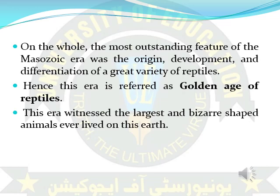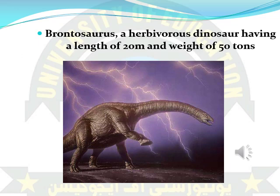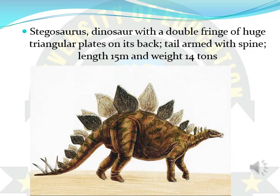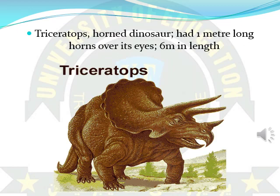Many largest and mysteriously shaped animals evolved on earth. Here you can see the Brontosaurus, a member of the dinosaurs. It was a herbivorous animal, with a length of about 20 meters and weighing about 50 tons. Here you can see the next dinosaur member called Stegosaurus, which had a large number of plates on its back. The length of Stegosaurus was about 15 meters and it weighed about 14 tons.